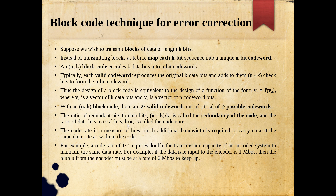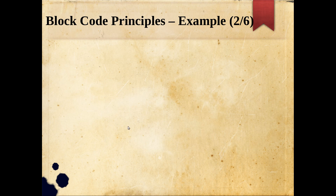For example, a code rate of 1/2 means k/n = 1/2, so n = 2k — the transmitted frame is twice the size of the original block. This means to maintain the same data rate, you need double the transmission capacity compared to an uncoded system. So actually sending the original data requires twice the bandwidth after adding the error correction bits.